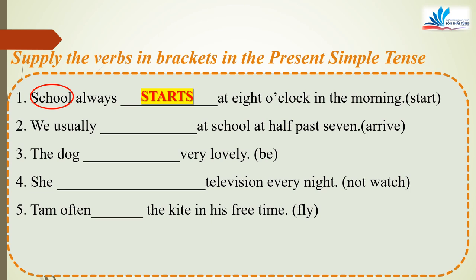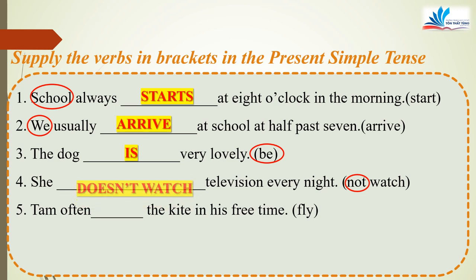Number 2: We usually arrive at school at half past 7. Chủ ngữ We, câu trần thuật, nên động từ ở dạng nguyên mẫu. Correct answer: arrive. Number 3: The dog is very lovely. Động từ là be, chủ ngữ the dog là danh từ số ít, nên đáp án là is. Number 4: She doesn't watch television every night — câu phủ định, đáp án là doesn't watch.